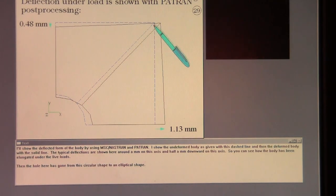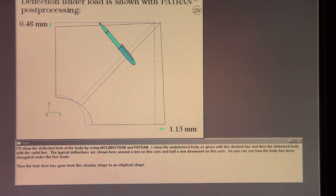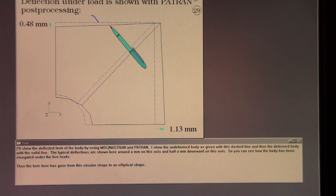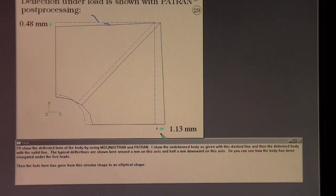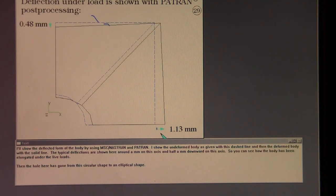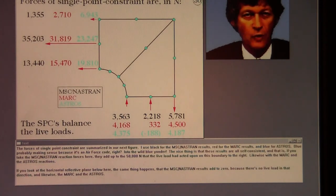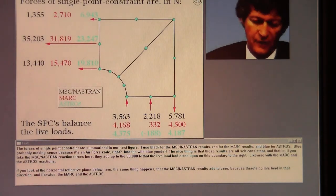I'll show the deflected form of the body by using MSC Nastran and Patran. I show the undeformed body as given with this dashed line and then the deformed body with the solid line. The typical deflections are shown here around a millimeter on this axis and a half a millimeter downward on this axis. So you can see how the body has been elongated under the live loads. Then the hole here has gone from this circular shape to an elliptical shape.